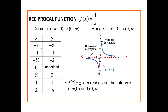Here I pick the values negative two, negative one, negative one-half, zero, one-half, one, and two. We take the reciprocal of these values: the reciprocal of negative two is negative one-half, the reciprocal of negative one is still negative one, the reciprocal of negative one-half is negative two, and the reciprocal of zero is undefined because we cannot divide by zero.